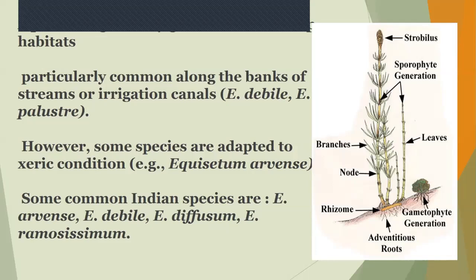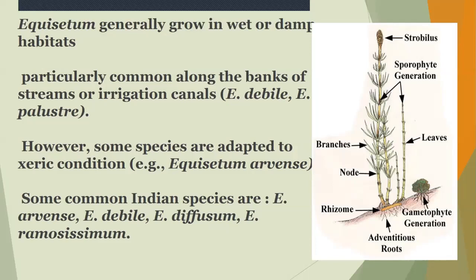Equisetum mainly grows in damp or wet habitats, particularly common along banks of streams or irrigation canals. However, some species like Equisetum arvense are adapted to xeric conditions. Some common Indian species are Equisetum arvense, Equisetum debile, Equisetum diffusum, and E. ramosissimum.